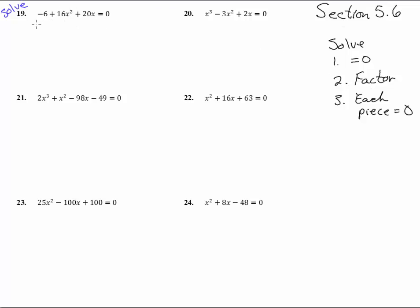So here we have, I'm going to write this in descending order so I can see to factor it, plus 20x minus 6 equals 0. We have a greatest common factor, we'll pull out a 2. We get 8x² plus 10x minus 3.